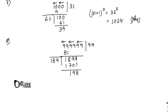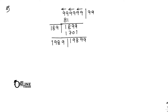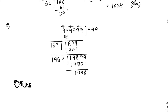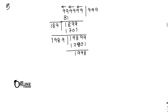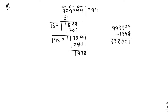Continuing the square root of 999999 — the last 6-digit number. After completing the long division, the remainder is 1998. To find the greatest 6-digit perfect square, subtract the remainder from 999999: 999999 minus 1998 equals 998001.